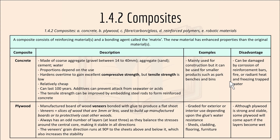Moving on to 1.4.2 Composites. A composite consists of reinforcing materials and a bonding agent called the matrix. The new material has enhanced properties compared to the original materials. We'll focus on concrete, plywood, fiber — carbon or glass — reinforced polymers and robotic materials.